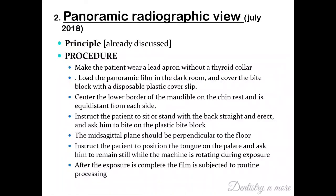When a question on panoramic radiograph is asked, start with the principle and diagrammatic representation, followed by the procedure. The patient is asked to wear a lead apron without a thyroid collar. Load the panoramic film in the dark room and cover the bite block with a disposable plastic slip. Center the lower border of the mandible on the chin rest at equal distance from each side. Instruct the patient to sit or stand with the backrest straight and erect, bite the plastic bite block, ensure the midsagittal plane is perpendicular to the floor, rest the tongue on the palate, and remain still while the machine rotates during exposure. After exposure, the film is subjected to routine processing.